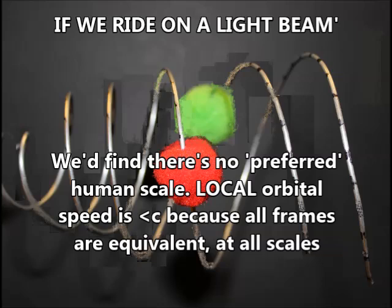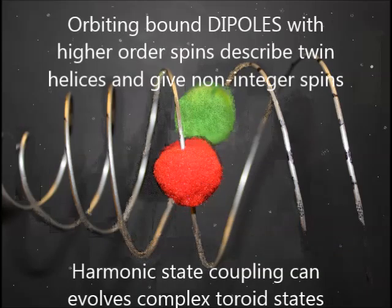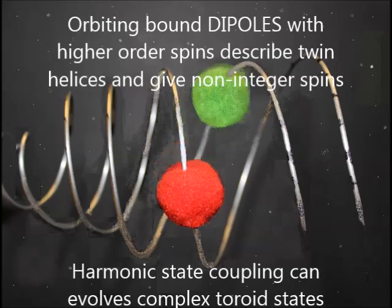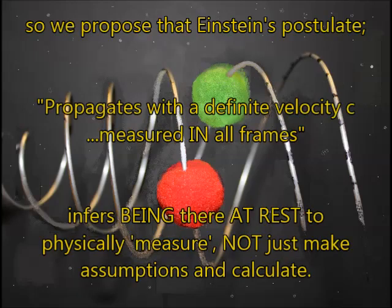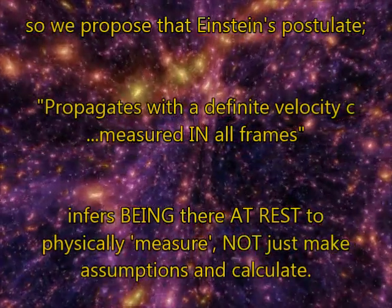Orbiting bound dipoles each with higher order spin give twin helices and non-integer spins. Harmonic state coupling could evolve complex toroid states from there. So we propose Einstein's postulate propagates with a definite velocity c measured in all frames. This infers being there at rest to physically measure, not just make assumptions and calculate.